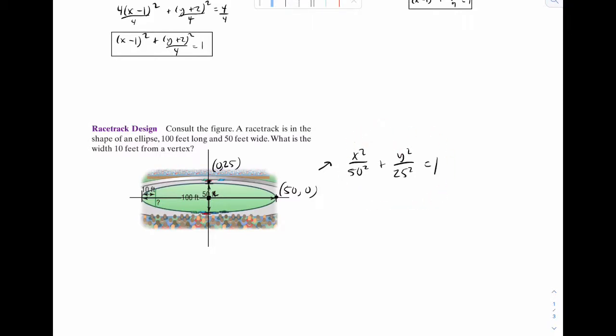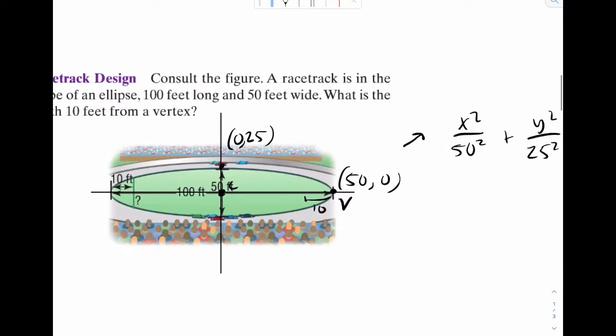But that doesn't answer the question. The question is, what is the width 10 feet from a vertex? So a vertex is right here. We want to go 10 feet away. Okay, so we're right here. And it wants this distance, like what's the width of that? So to do that, let's think about this coordinate. I do know that coordinate is 40, 0. Because if this is 50, take away 10, that could be 40.